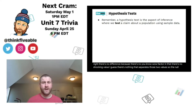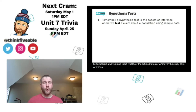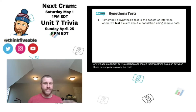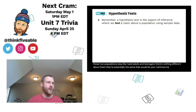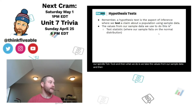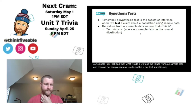The null hypothesis is always going to be whatever the article states or whatever the study says. For a two-proportion or two-means test, it states those two means are in fact equal, because there's nothing going on between those two populations — adults and teenagers are essentially the same under the null. We then take the values from our sample data to calculate our test statistic.